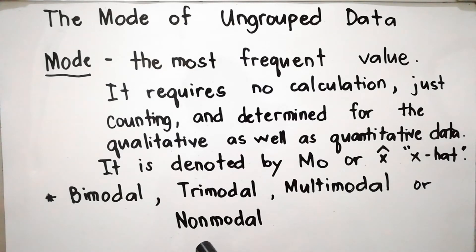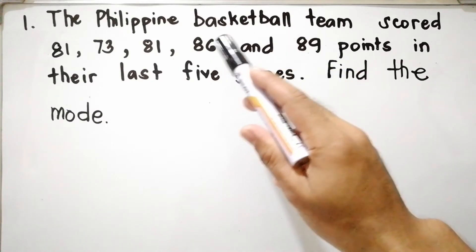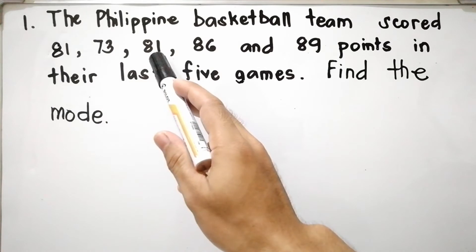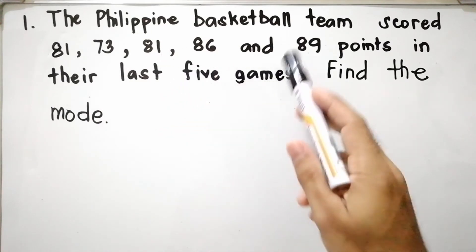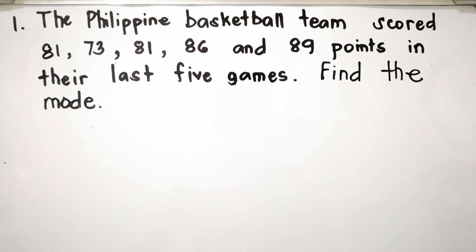Let us have example number one. The Philippine basketball team scored 81, 73, 81, 86, and 89 points in their last five games. Find the mode.